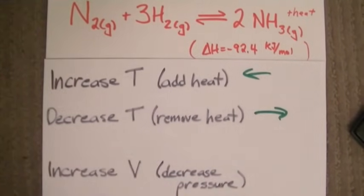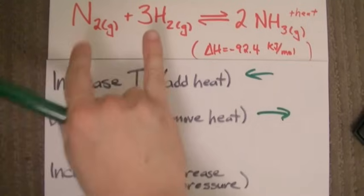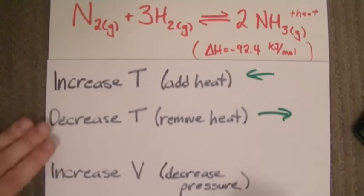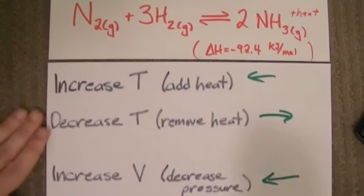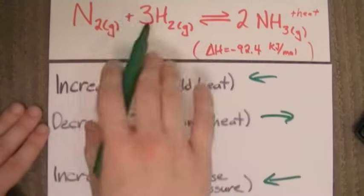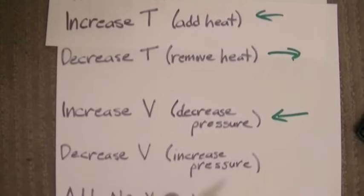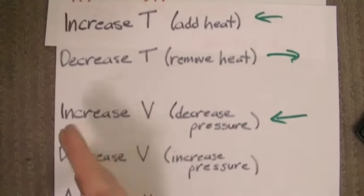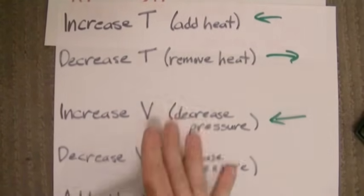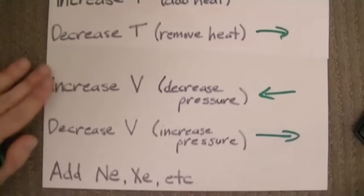Or you can just memorize it this way: increase volume, shift to the side with more moles of gas. I have four moles of gas on the reactant side and two moles of gas on the product side. So increasing the volume makes me shift to the left, because I can double my pressure for every two moles of this that I convert to four moles of this. And consequently, if I decrease my volume, that increases my pressure. We want to alleviate that increase in pressure by shifting to the side with fewer moles of gas. In this case, that is the right-hand side. So decreasing my volume shifts to the right.